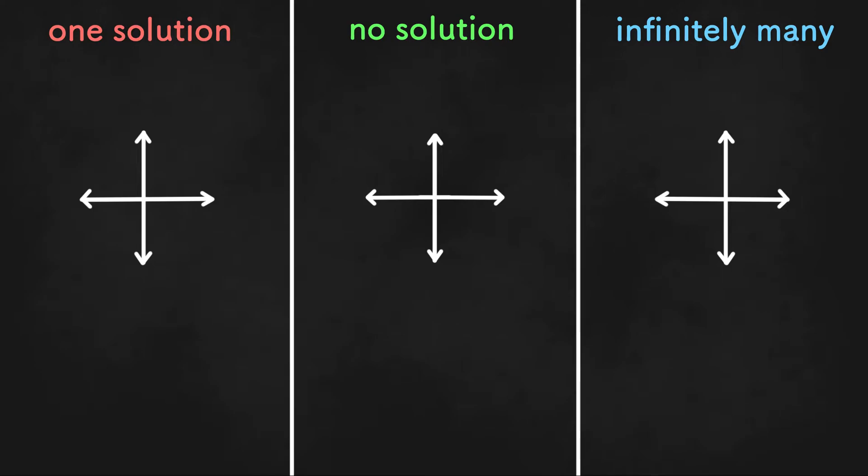There are three different types of solutions to systems of equations: one solution, no solution, and infinitely many solutions.